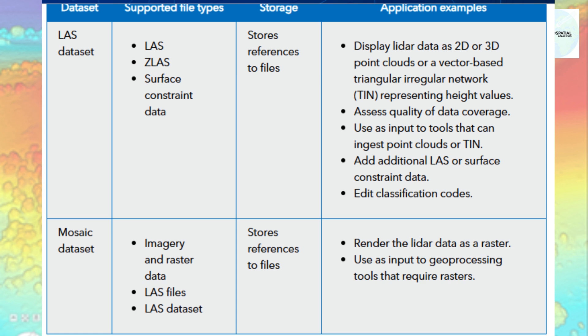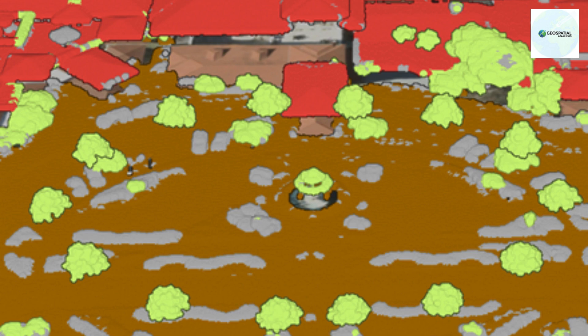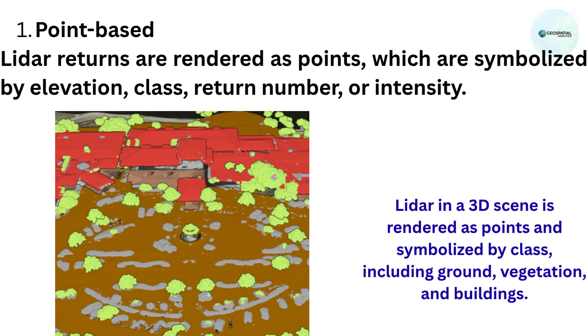LiDAR Visualization Options: in ArcGIS Pro, you can render LiDAR data as points, surfaces, and lines in 2D maps and 3D scenes, based on the attribute information associated with each return. Point-based rendering: points are symbolized by elevation, class, return number, or intensity.